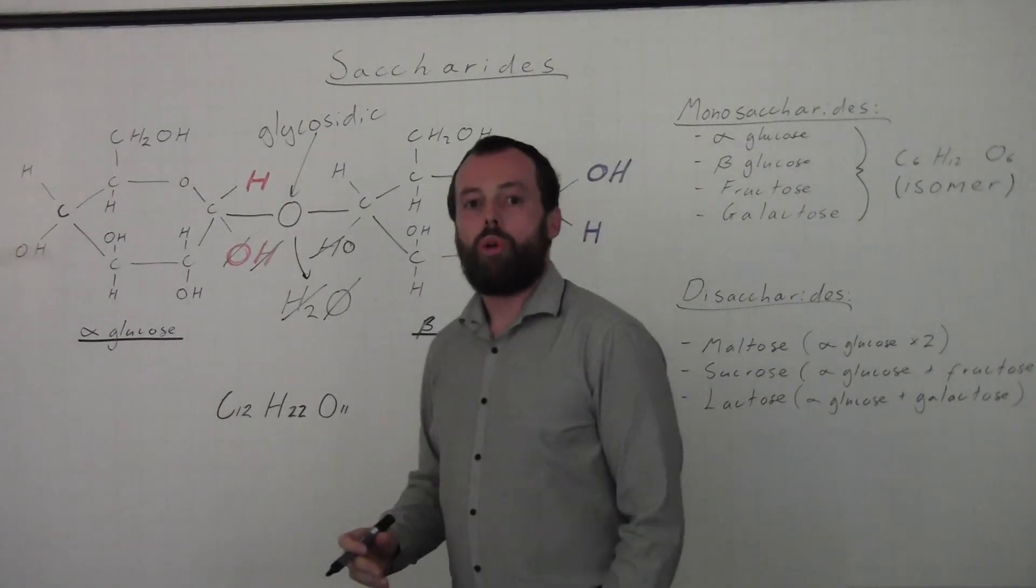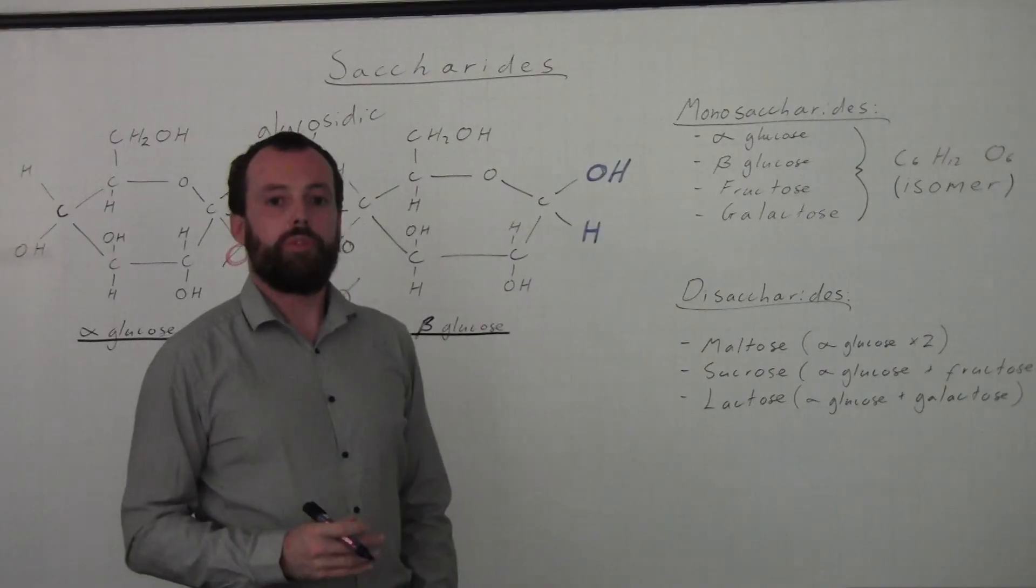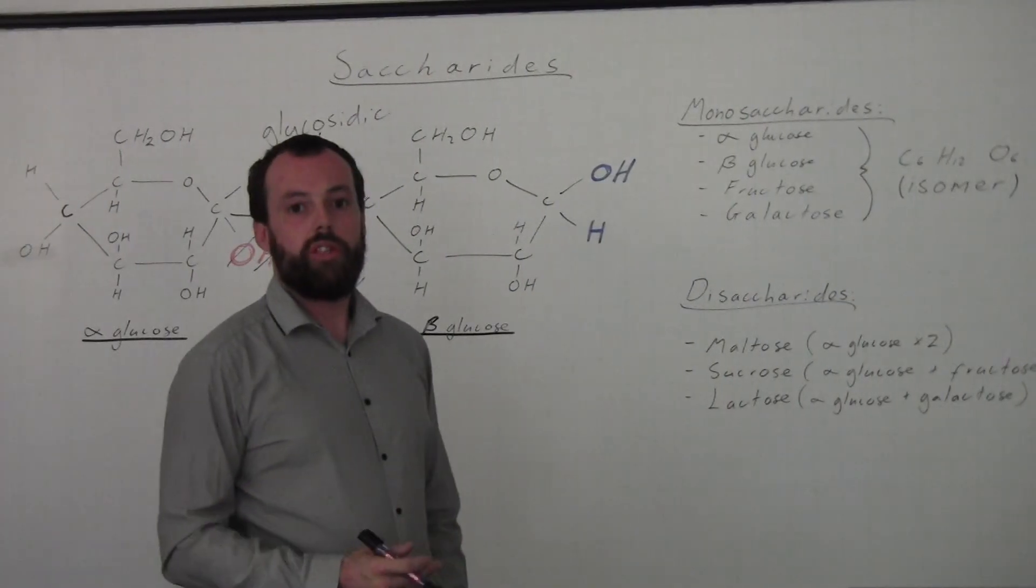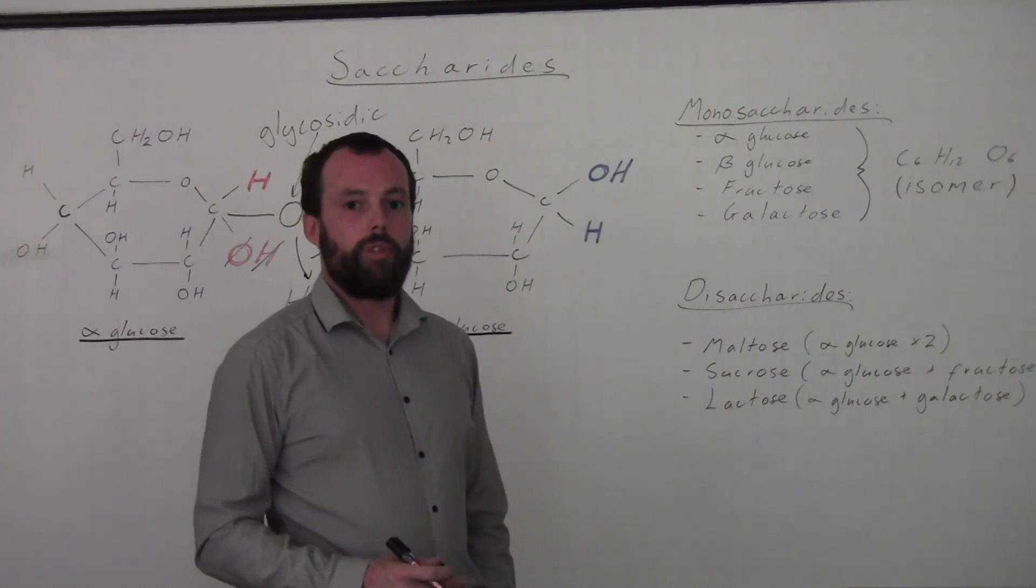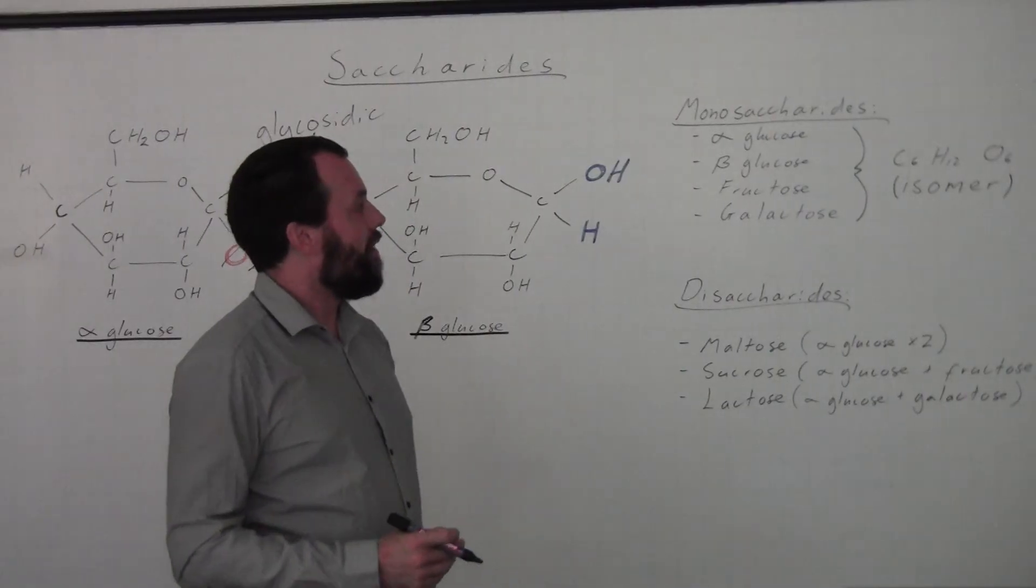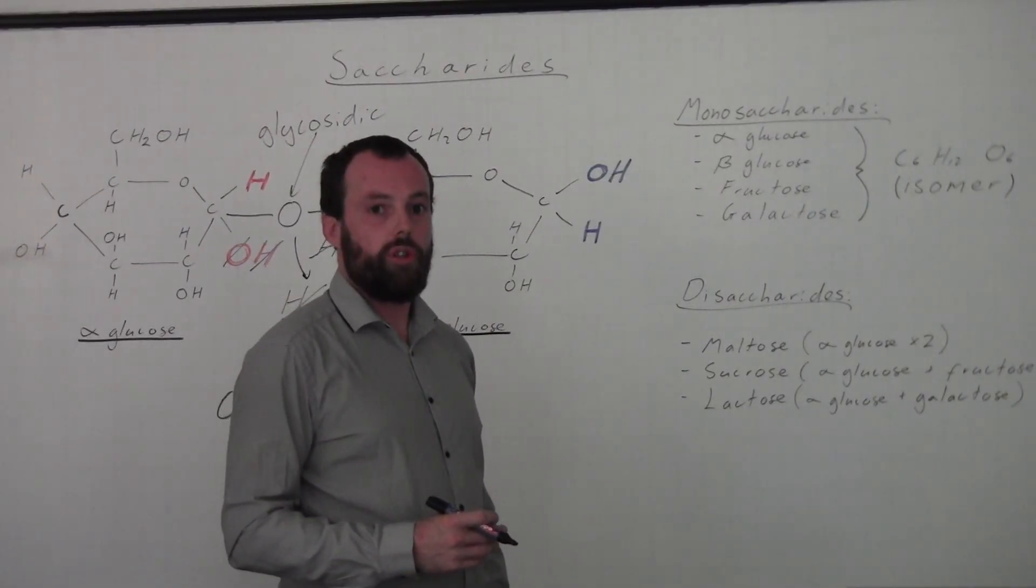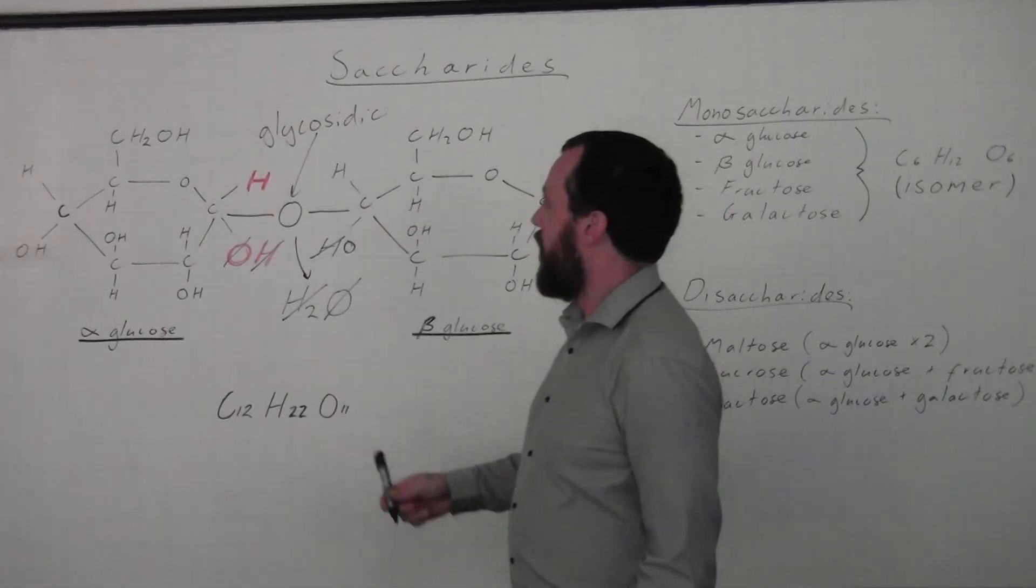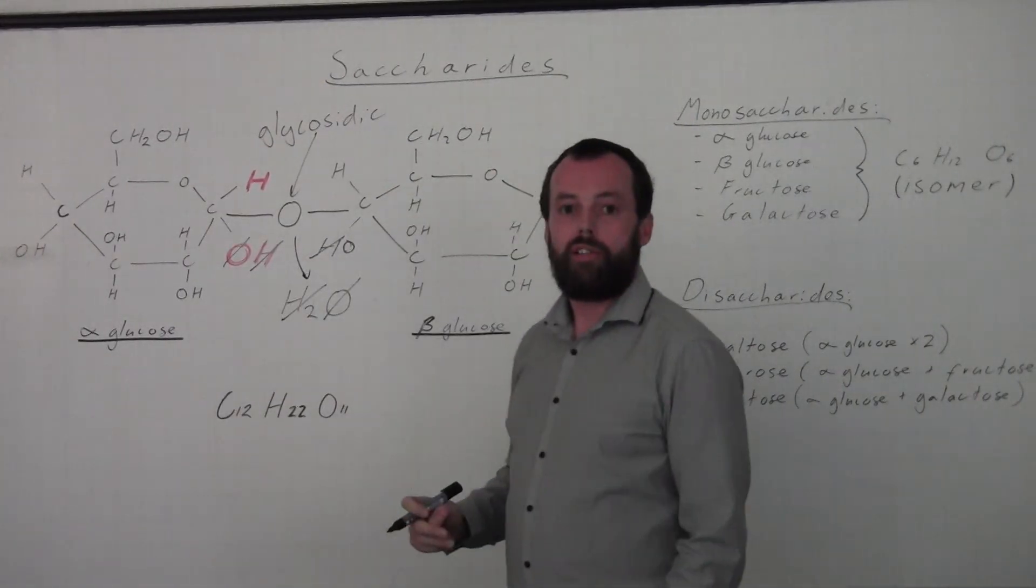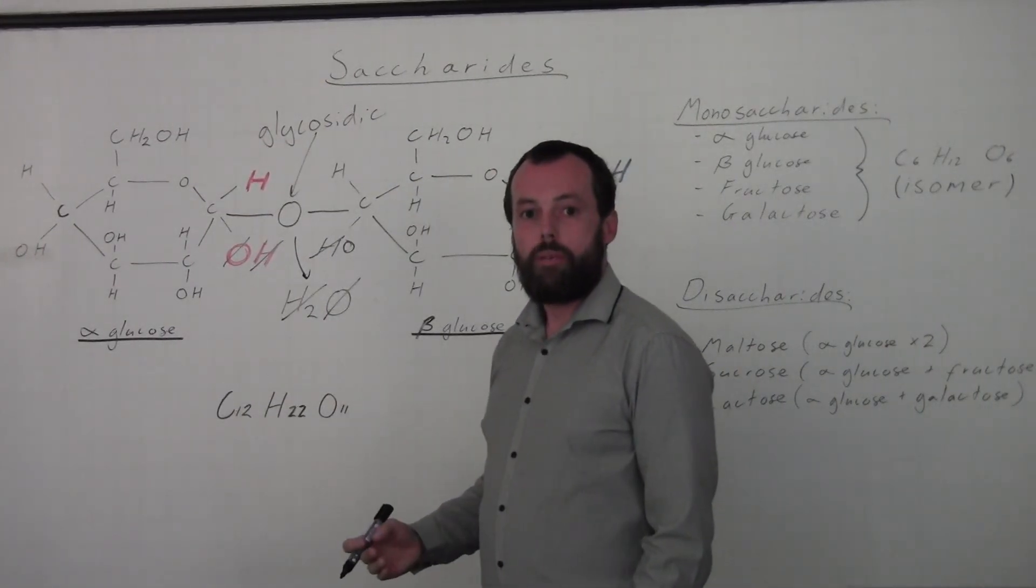Now all of these monosaccharides that we've talked about have the properties that they are sweet and that they are soluble. These monosaccharides that we're talking about are also called hexose sugars, and you can see the reason why - because as you lay out their diagram, they are a hexagonal shape.